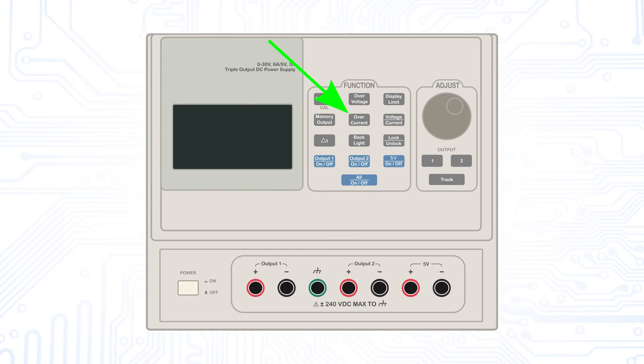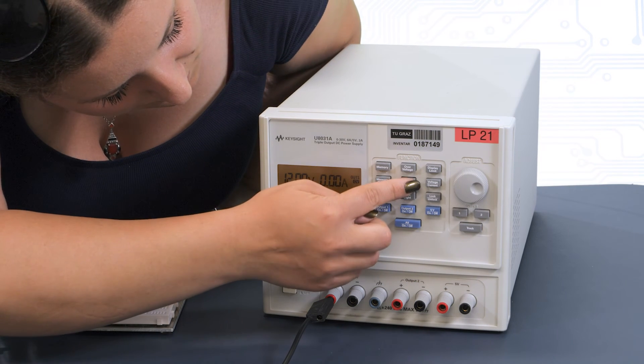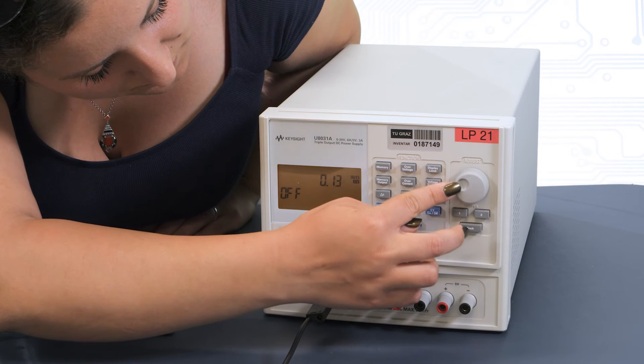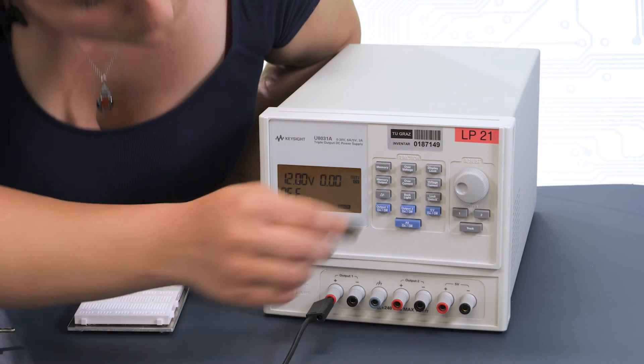Another safety mechanism that this power supply offers and that I would like to mention here is the overcurrent protection. To set the overcurrent protection, our power supply has a button called overcurrent. By pressing this button, you can set the desired maximum current. Pressing the overcurrent button again activates the overcurrent protection.